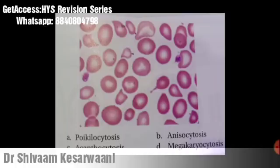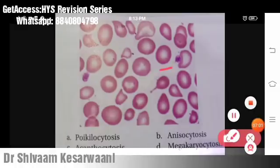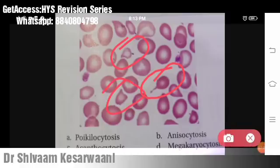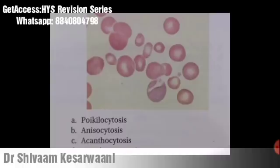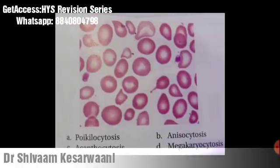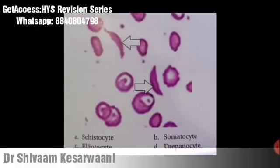Tell me this condition — is this anisocytosis or poikilocytosis? Here you can see abnormally shaped RBCs of different shapes — not different sizes but different shapes. This is poikilocytosis and not anisocytosis. Compare with the previous image where they had the same shape but different sizes; here they have different shapes — that's why it is poikilocytosis.